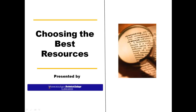When you are assigned a research project, your instructor may require you to use certain types of resources and avoid other types. At other times, you may be free to choose whatever types of sources you want. Regardless of whether you get to choose, it is helpful to know what types of resources would be best to use for your research. The following is a simple overview to get you started.